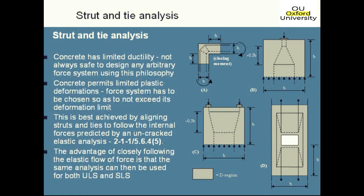The Eurocode says there are an infinite number of ways to idealize with different angles, but we need to play by some basic rules. Concrete has limited ductility — just as in the shear truss model where the truss angle must be between 45 and 21.8 degrees, there are angle limits here too. Initially, concrete behaves elastically before cracking, and once cracking occurs the structure rotates to suit where reinforcement is placed, but there's a limit before the concrete loses its compressive strength excessively.